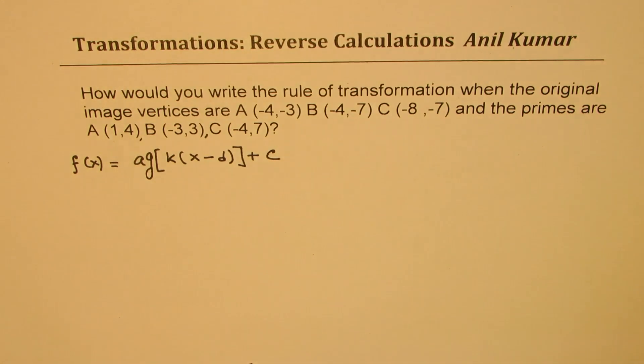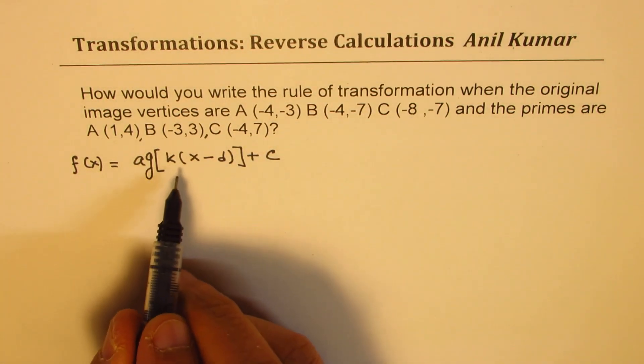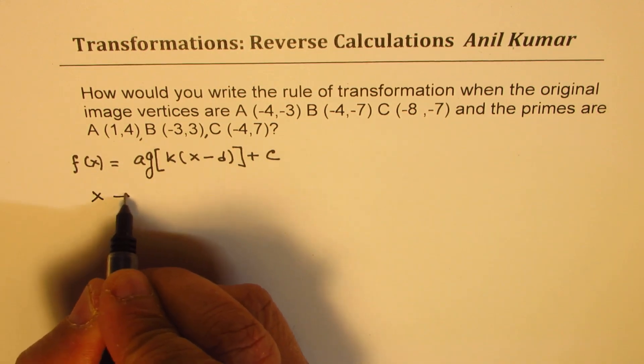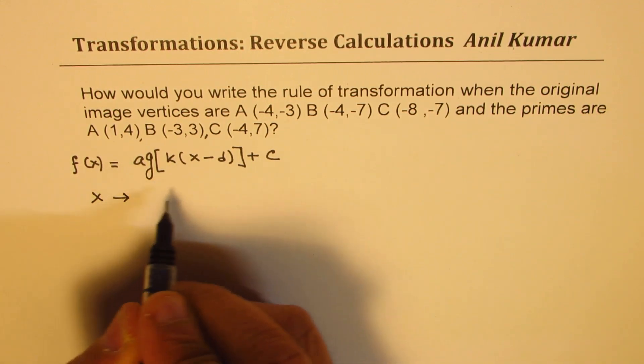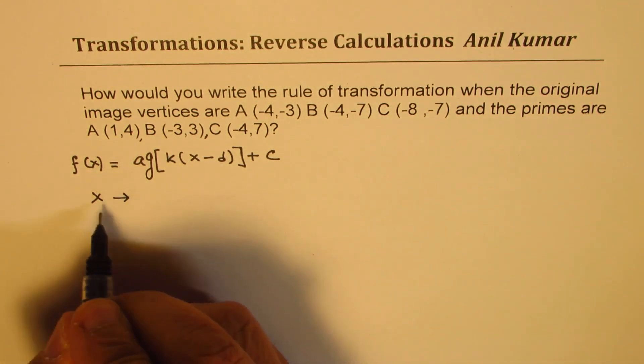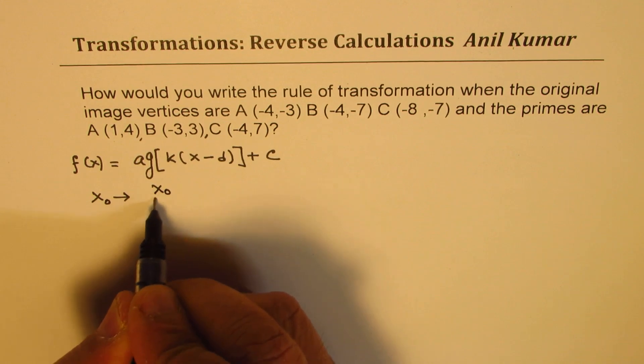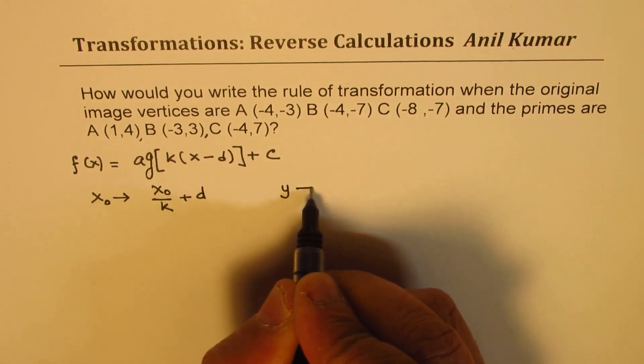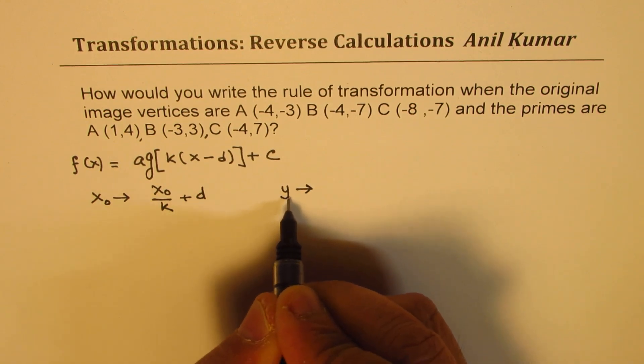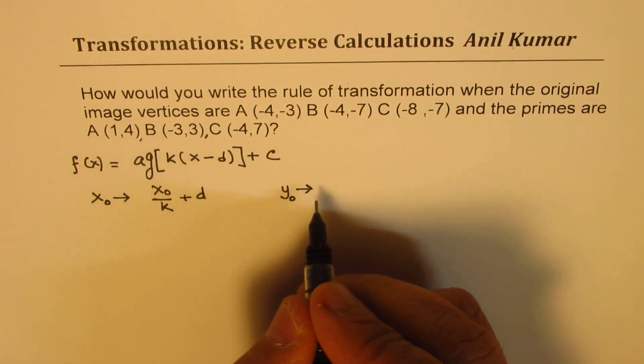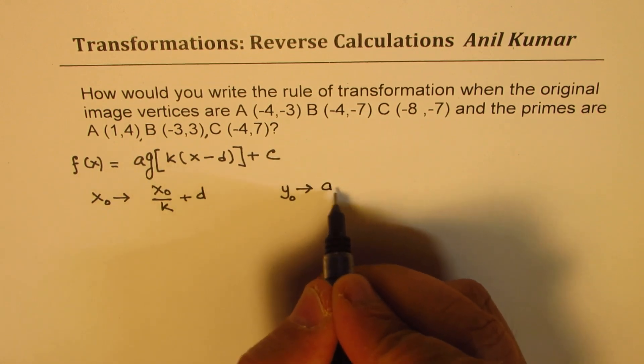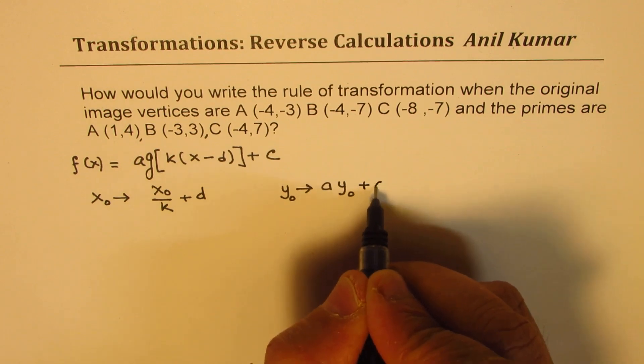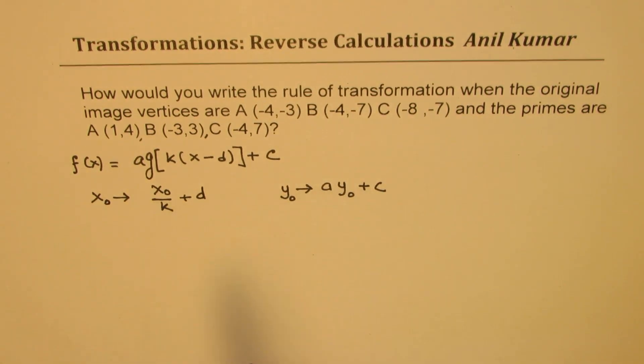If that is the transform function, then the transformation which takes place is: for x values, the value of x changes from the original x₀ to x₀/k + d, and the y value changes from y₀ to a times y₀ plus c. So this is horizontal; that is vertical.